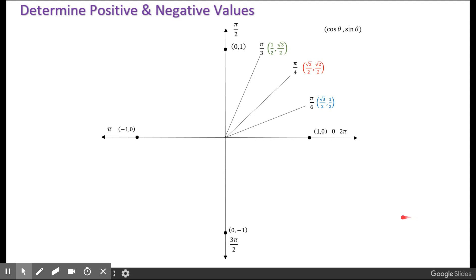You also have to recognize that the value of the cosine is the x part of the coordinate, the value of the sine is the y part of the coordinate. So if I asked you for the cosine of pi over 3, you would tell me a half. If I asked you for the sine of pi over 6, you would tell me a half.